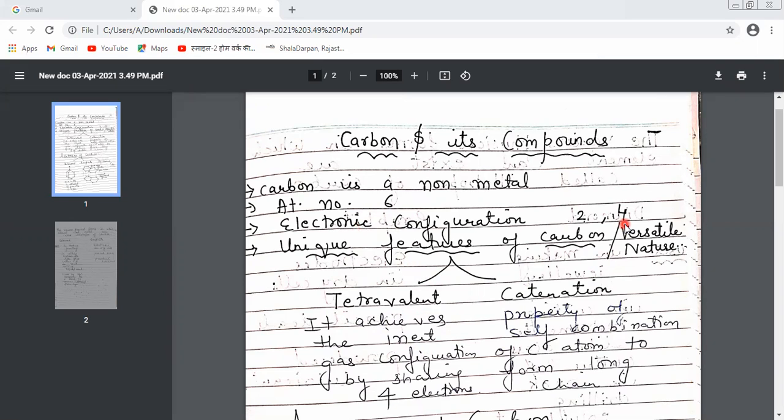The second property is catenation. What is catenation? It's the property of self-combination of carbon atoms to form long chains. Carbon atoms form long chains, and in the remaining bonds we attach hydrogen.